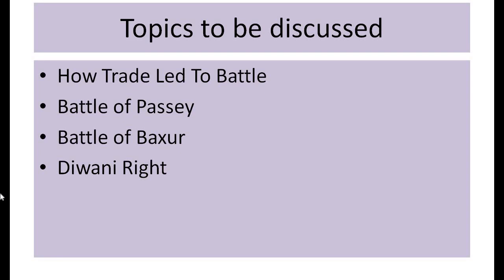The British power began to emerge in India from the second half of the 18th century. They came originally as a small trading company — the East India Company. In 1600, the East India Company acquired a charter, meaning written permission, from Queen Elizabeth I, granting it the sole right to trade with the East — i.e., the right to trade with India.